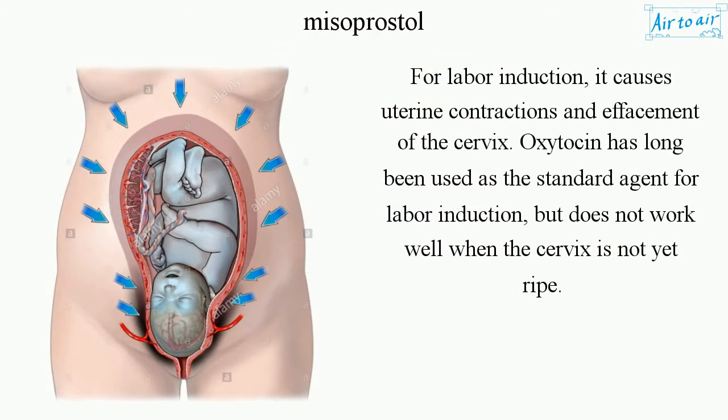For labor induction, it causes uterine contractions and effacement of the cervix. Oxytocin has long been used as the standard agent for labor induction, but does not work well when the cervix is not yet ripe.